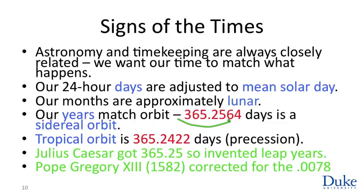However, this is not completely precise enough. What we actually want our calendar to match is the seasons. The seasons depend on the Earth's position relative to the sun and the direction of the tilt of the terrestrial north pole — which wobbles to the west rather than to the east. So a complete cycle from solstice to solstice is a little bit shorter than the sidereal year. This is called the tropical orbit.